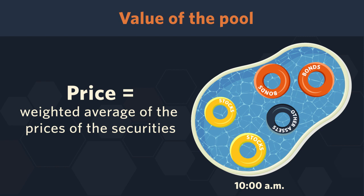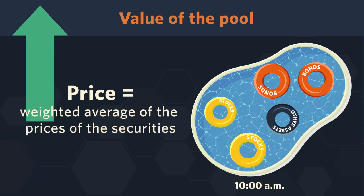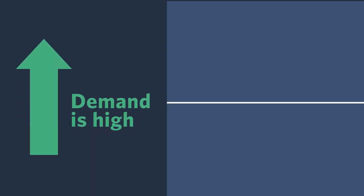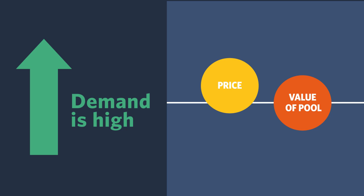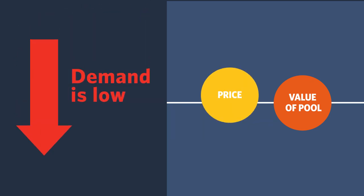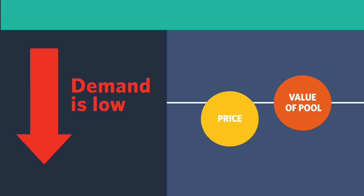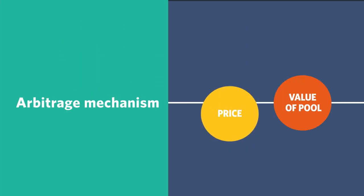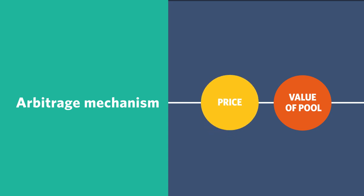When the prices of the underlying securities move around, the ETF's price should move as well. The ETF's price is also determined by supply and demand for the ETF itself on the exchange. So if demand for the ETF is really high at 10 a.m., that will increase the ETF's price potentially above the value indicated by the underlying securities. The reverse can happen as well. In another video, we'll discuss the arbitrage mechanism and how it helps keep the ETF's price aligned with the underlying value of the ETF's pool throughout the trading day.